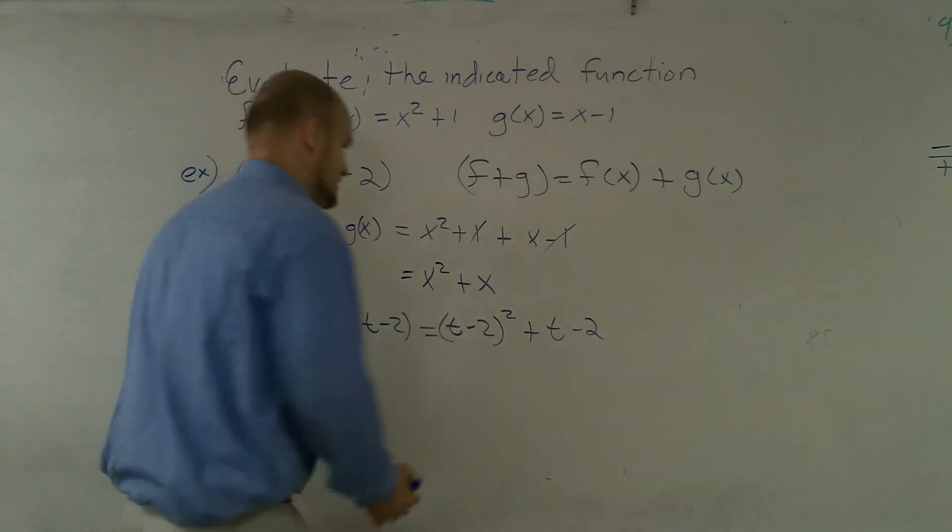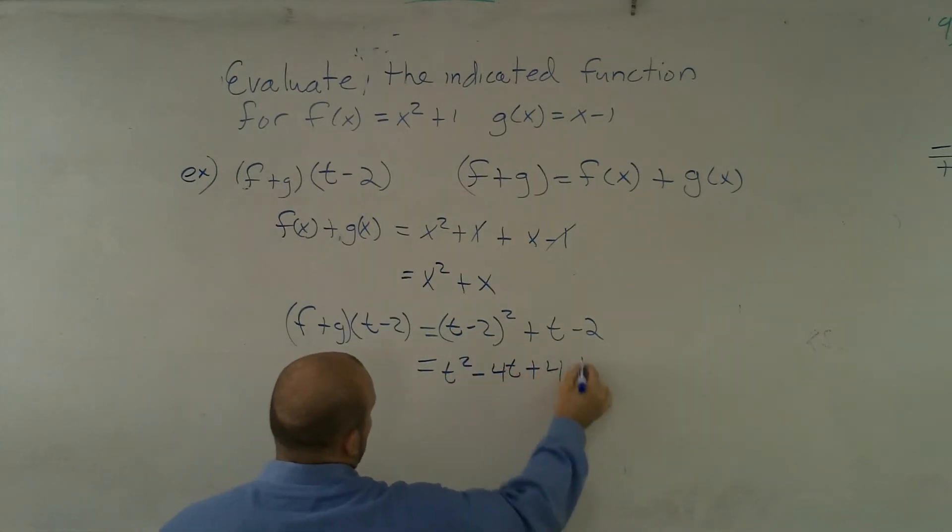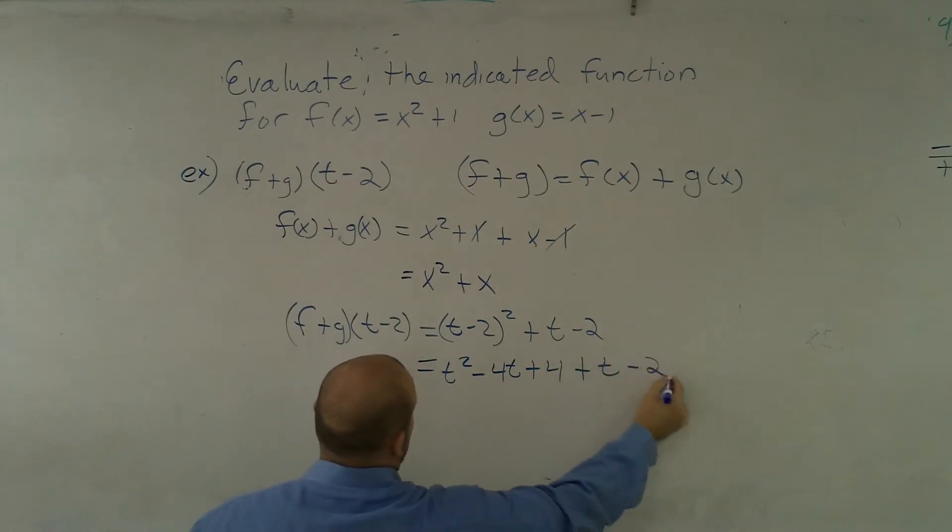So then, now I just need to go ahead and do this. This will become t² - 4t + 4 plus t - 2.